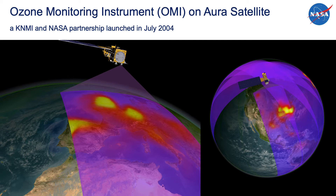The OMI instrument's wide swath and the Aura satellite's orbit allows OMI to observe the entire Earth each day at approximately 1:30 in the afternoon. Because OMI is measuring reflected sunlight, it cannot detect pollution below clouds.